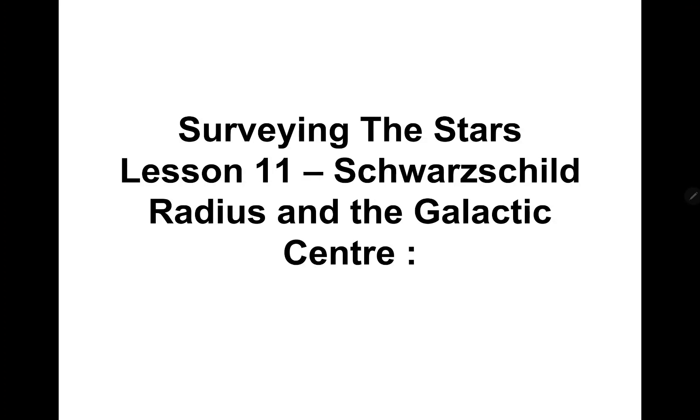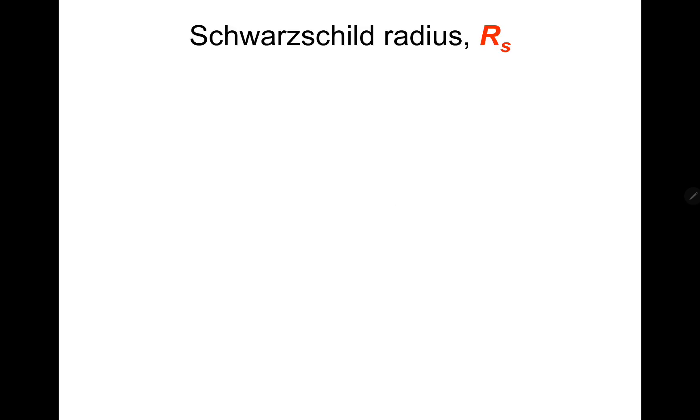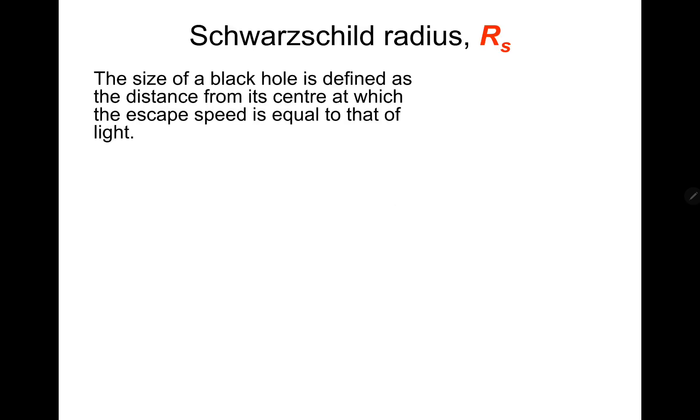This is astrophysics, surveying the stars lesson 11, the final one for this topic area. This is Schwarzschild radius and the galactic center. Galactic center being the center of a galaxy. So Schwarzschild radius: the size of a black hole is defined as the distance from its center at which the escape speed is equal to that of light.